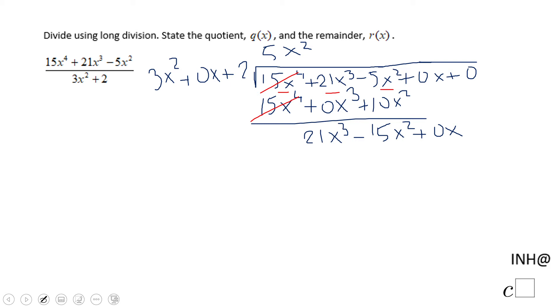But let's see. What should I multiply 3x squared to get 21x cubed? And that is 7x. 7x times 3x cubed is 21x cubed. 7x times 0x is 0x squared.